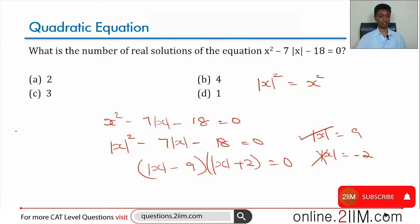So we are trying to solve for x. If mod x can be 9, then x can be plus or minus 9, two different values.